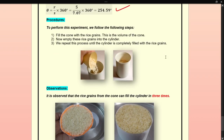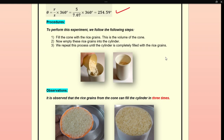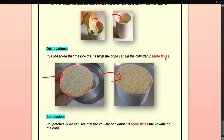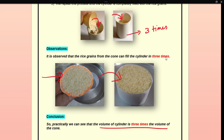After that, we put some rice grains into the cone and pour them into the cylinder. We repeat this — filling the cone and pouring into the cylinder. We will see that the amount of rice grains in the cone fills the cylinder exactly three times, hence proving that the volume of the cylinder is three times the volume of the cone.